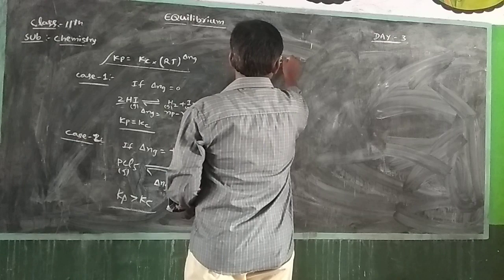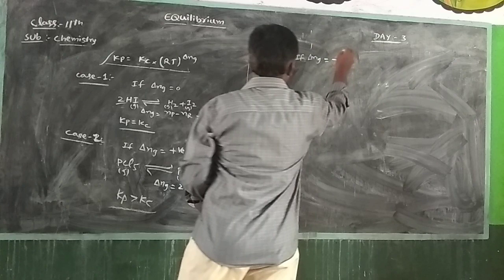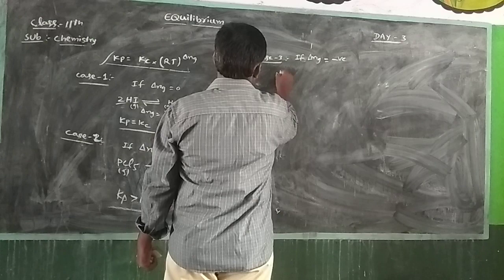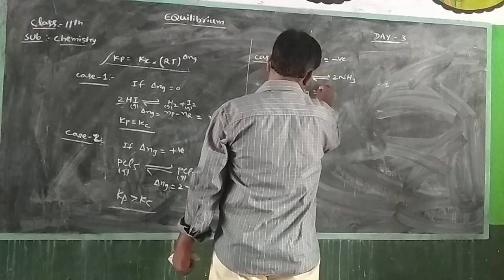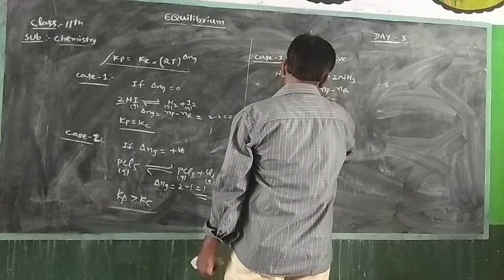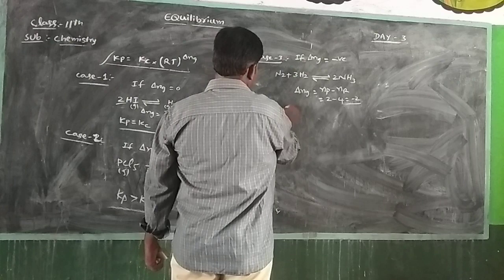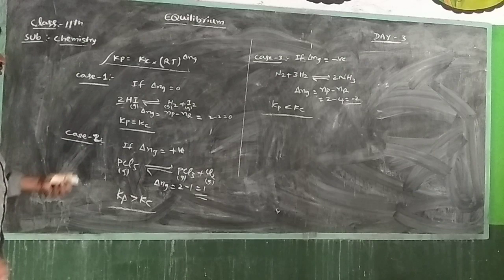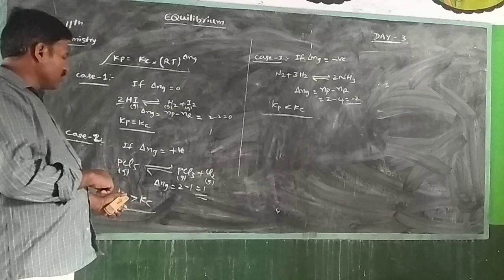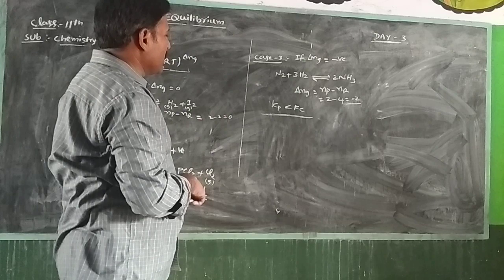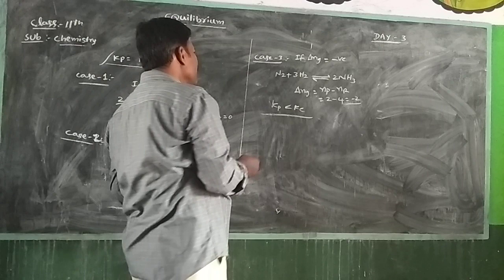Case 3: if ΔNg is negative. For example, N2 + 3H2 ⇌ 2NH3. Here ΔNg equals products minus reactants equals 2 minus 4 equals minus 2, which is negative, so Kp is less than Kc. Summary: ΔNg = 0 → Kp = Kc; ΔNg positive → Kp > Kc; ΔNg negative → Kp < Kc.